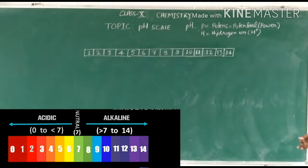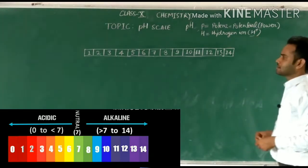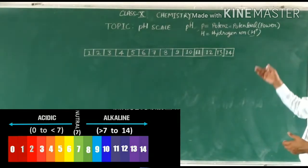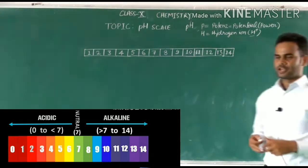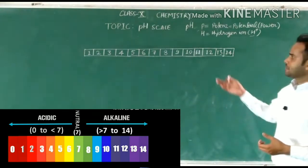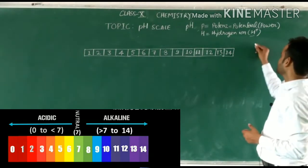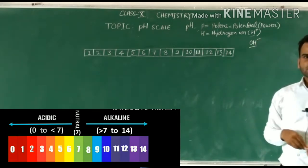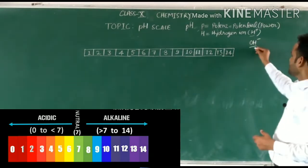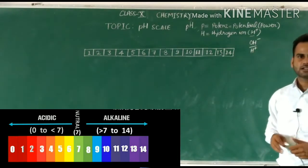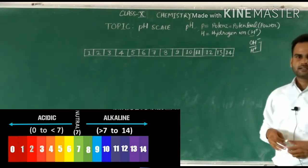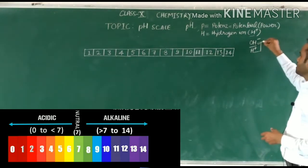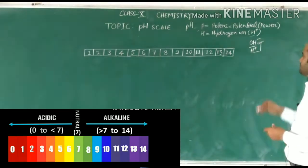Basically, pH scale is a scale that tells us about the strength of the acid or base on the basis of hydrogen ion concentration. You might wonder: if it considers hydrogen ion in the solution — the aqueous solution of acid or base — then how can it tell us about bases? Bases also contain H⁺ ions, but the amount of H⁺ ion is very, very less in comparison to OH⁻ hydroxide ion in a base.